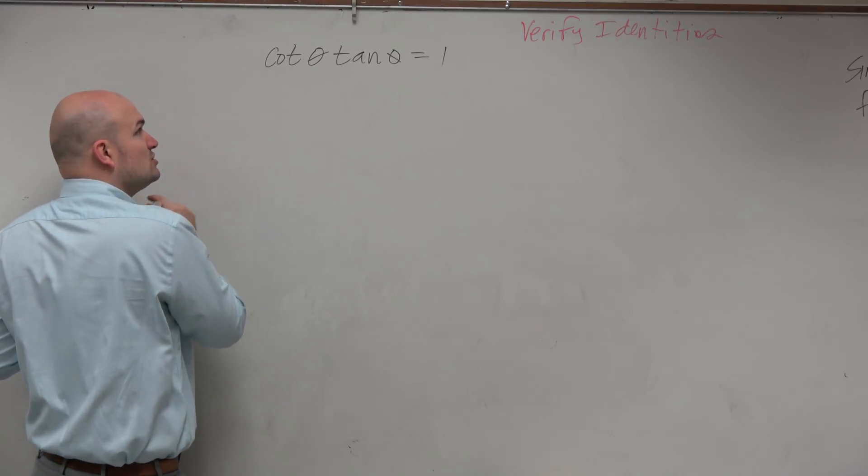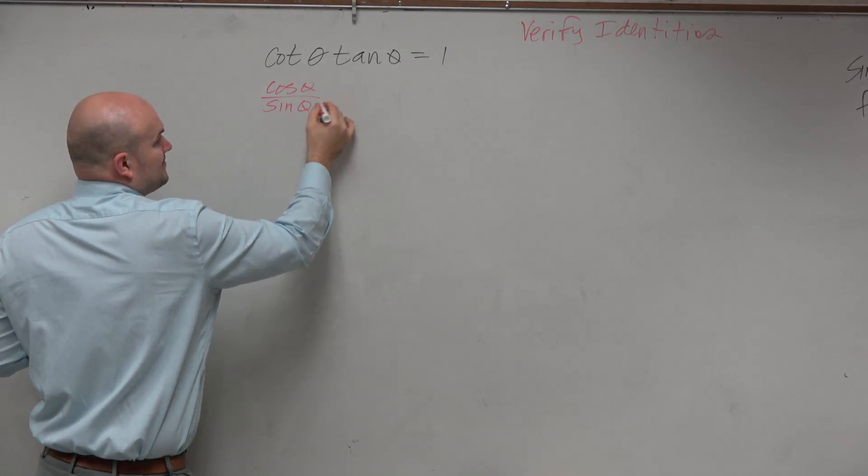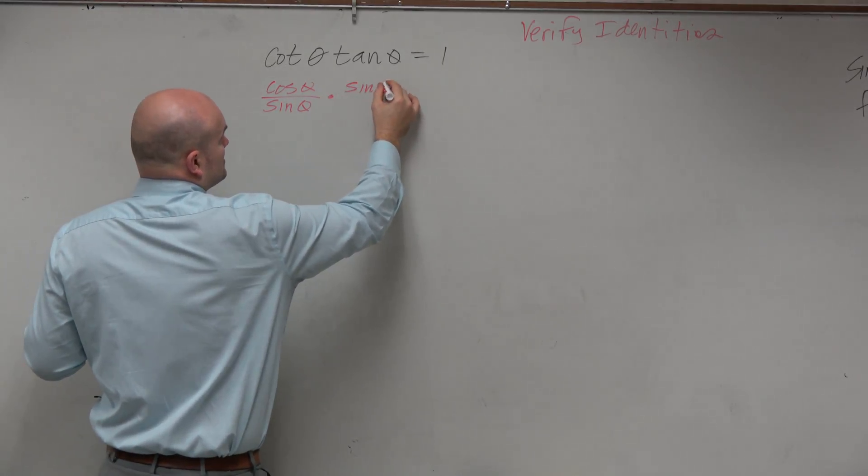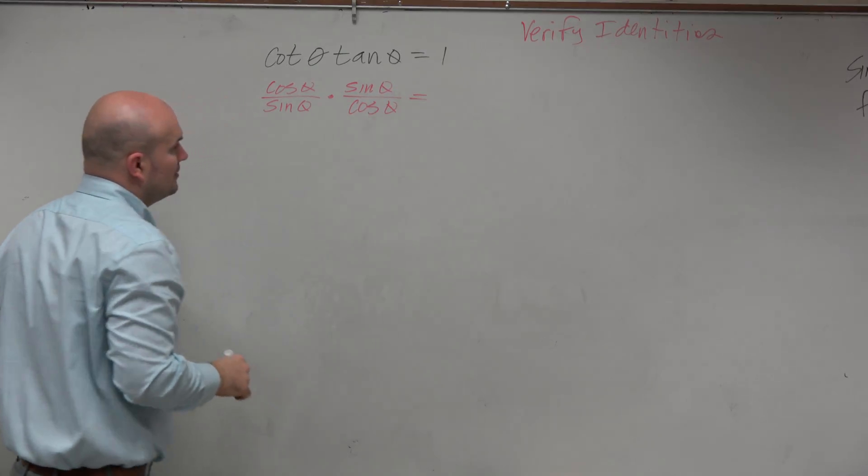So in this case, we could use the quotient identity. I could say cosine of theta over sine of theta times sine of theta over cosine of theta.